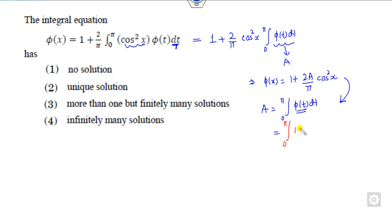This is integral from 0 to pi of 1 plus 2a upon pi cos square of t. Now you can integrate them.